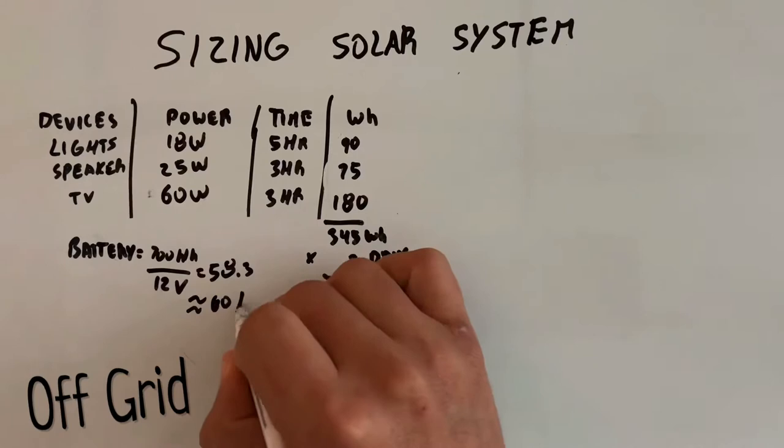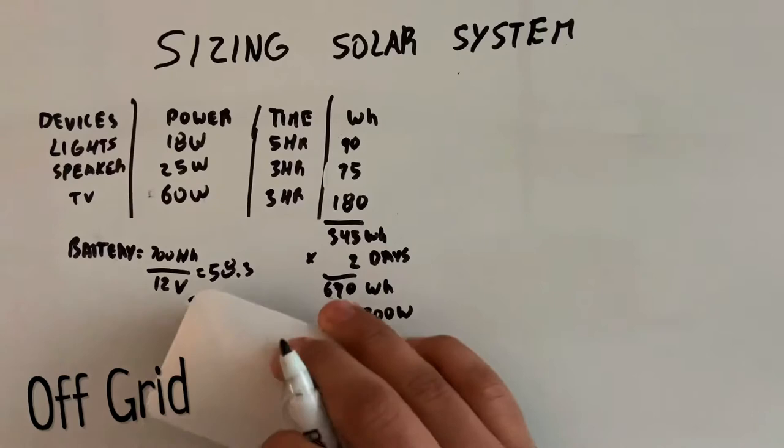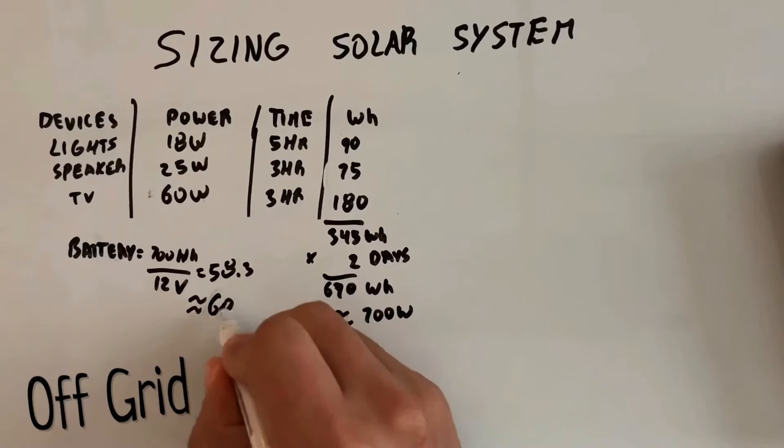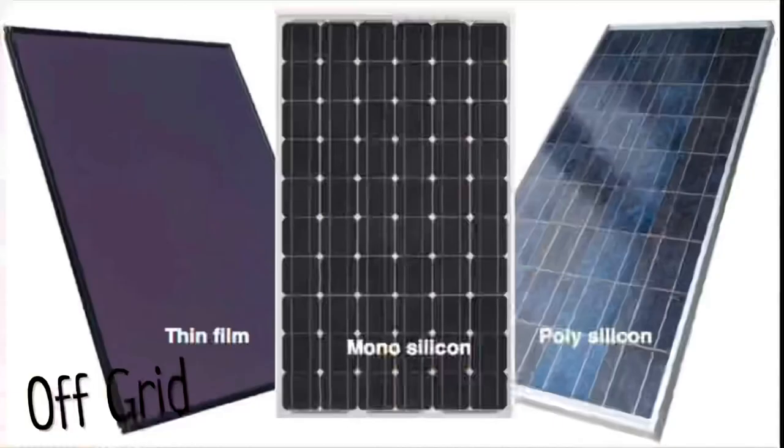So it's going to be about 58.3 amp hours. We can round this up to 60 amp hours. Now if we get an AGM battery, this means double due to the 50% discharge rate, but we'll talk about it later. Now panels.